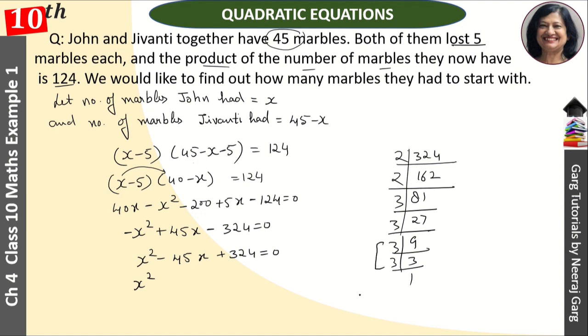So 3 into 3 is 9. And if we multiply them, 2 into 2 is 4, 4 into 9 is 36, and 36 plus 9 is 45. So these factors become minus 36x minus 9x plus 324. That is equal to 0.